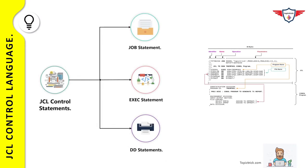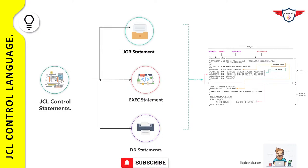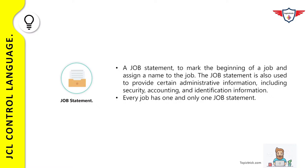The first job control statement is the job card. A job statement is the first statement of any JCL — it marks the beginning of a job and assigns a name to it. The job statement provides administrative information including security, accounting, and identification information. A JCL can have one and only one job card; you cannot have more than one job card in a single JCL.